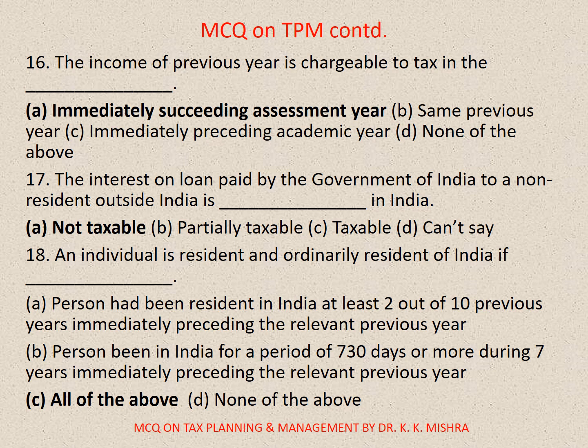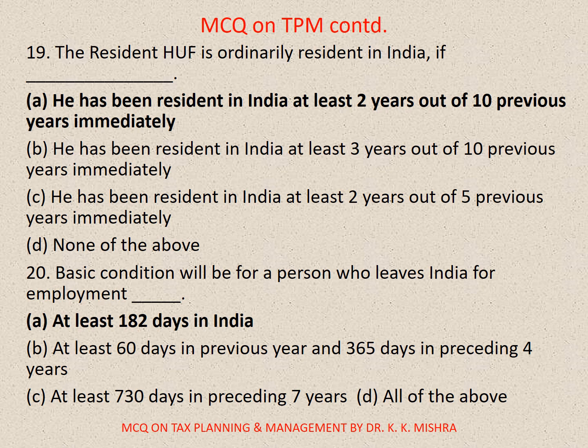Question 17: The interest on loan paid by Government of India to a non-resident outside India is — the correct option is A. Not taxable in India. Question 18: An individual is resident and ordinarily resident of India if — A. The person had been resident in India at least 2 out of 10 previous years immediately preceding the relevant previous year, and B. The person has been in India for a period of 730 days or more during 7 years immediately preceding the relevant previous year. Question 20: The basic condition for a person who leaves India for employment — the correct option is A. At least 182 days in India.